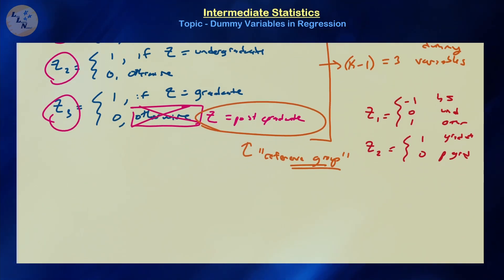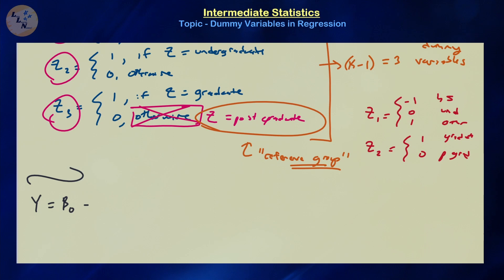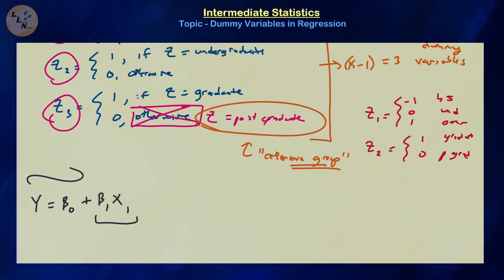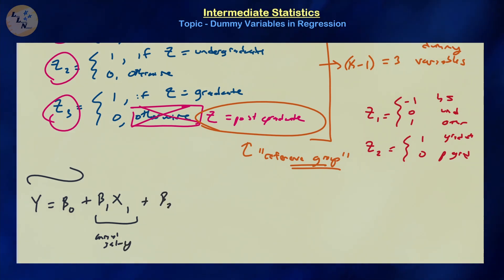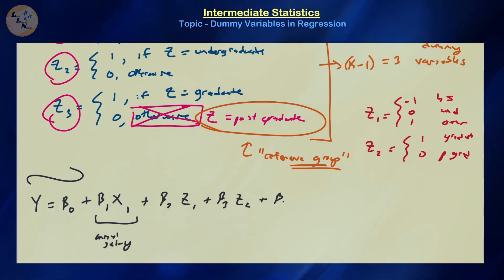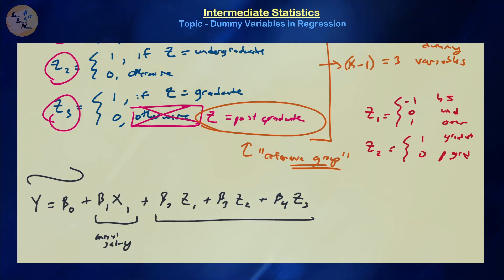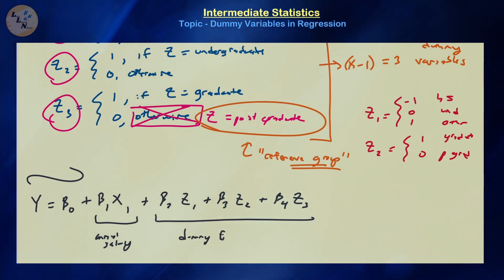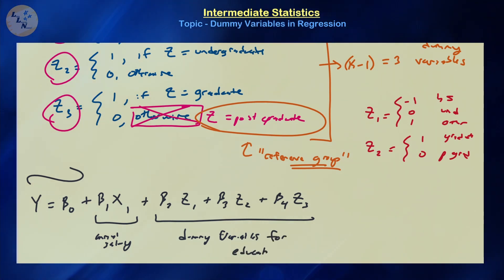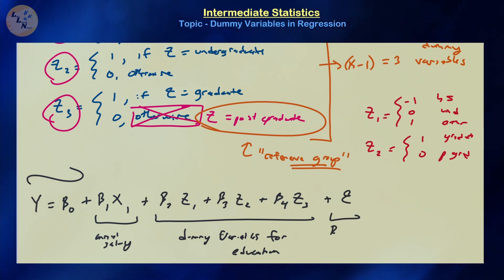So what would our multiple linear regression model look like? We have y equals beta zero plus beta one times x1 — our explanatory variable for annual salary — plus beta two times z1, plus beta three times z2, plus beta four times z3, which are our dummy variables for education level, plus our residual term epsilon. That is our new multiple regression model, and you can execute the normal procedure to find coefficients beta one through beta four and perform hypothesis tests on them.